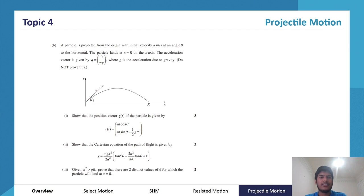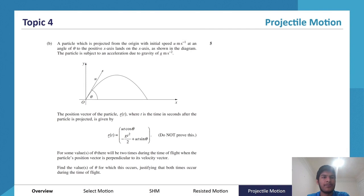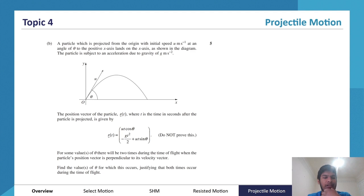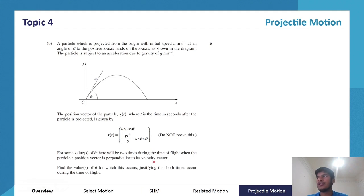This was actually from the 2020 HSC, and for 8 marks, I would say it was pretty generous. So this is another HSC question — this one's actually trickier. It involves a bit more vectors, but again it's still built on extension 1 content.